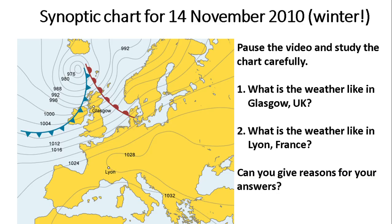Let's test your understanding with a synoptic chart for the 14th of November 2010. You can pause the video while you study this. Look for Glasgow in Scotland and think about what the weather is like there - this is November so temperatures will be cold. Think about different weather elements. For question two, do the same for Lyon - what is the weather like in Lyon? Try to give reasons for your answers.